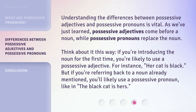Understanding the differences between possessive adjectives and possessive pronouns is vital. As we've just learned, possessive adjectives come before a noun, while possessive pronouns replace the noun. Think about it this way: if you're introducing the noun for the first time, you're likely to use a possessive adjective — for instance, 'Her cat is black.' But if you're referring back to a noun already mentioned, you'll likely use a possessive pronoun, like in 'The black cat is hers.'